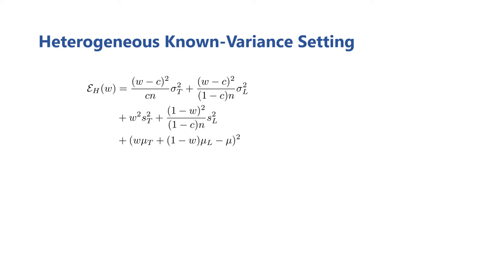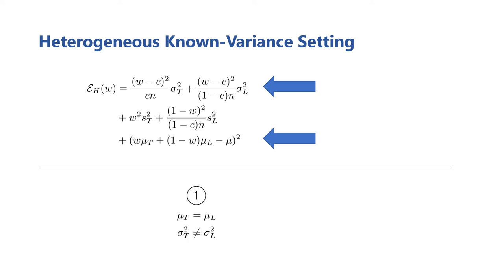Examining the error expression for our hybrid family, we see that no properties of the distributions affect the error other than their means and variances. Because of this, to better understand the effect of having differing distributions between the groups, we perform two separate analyses: the first where the means of the distributions are the same but their variances are different, and the second where the means are different but the variances are the same.